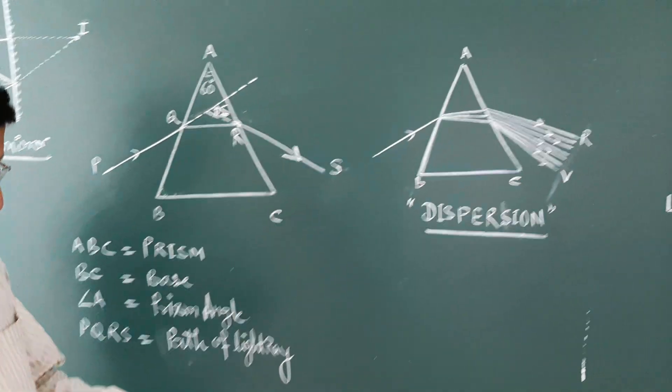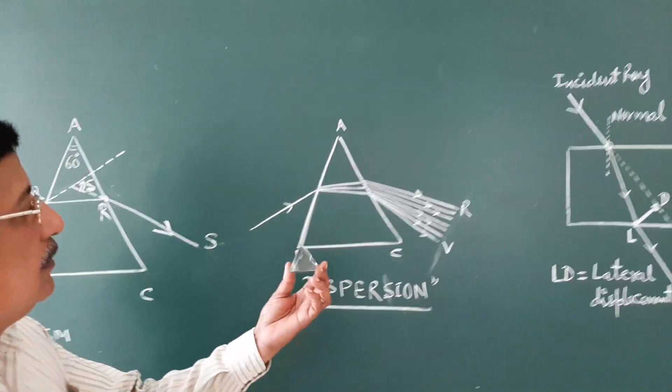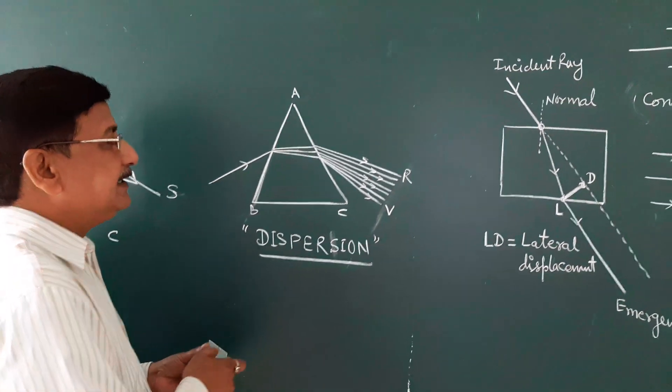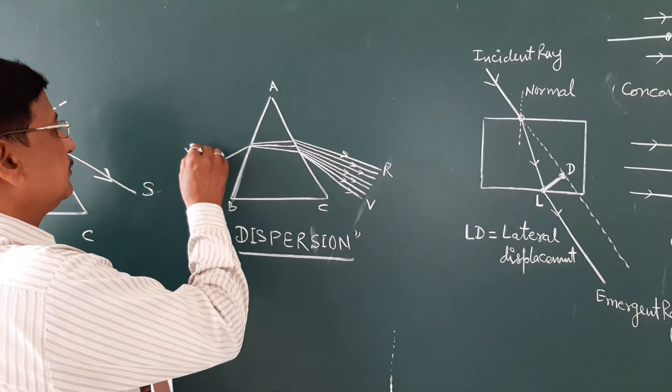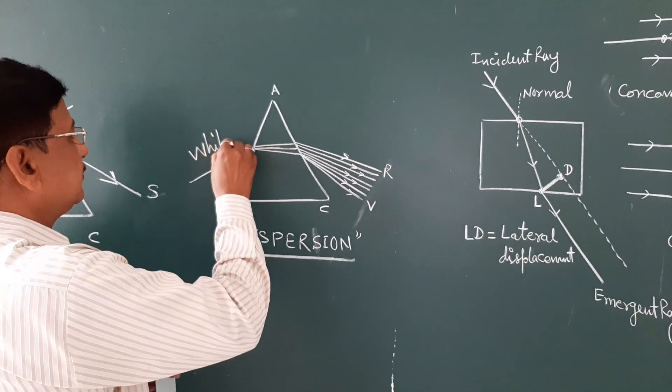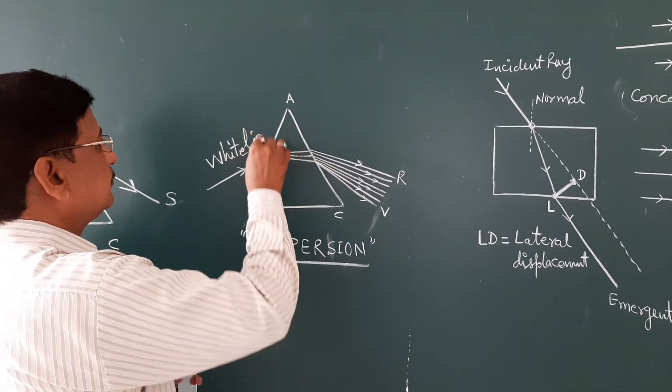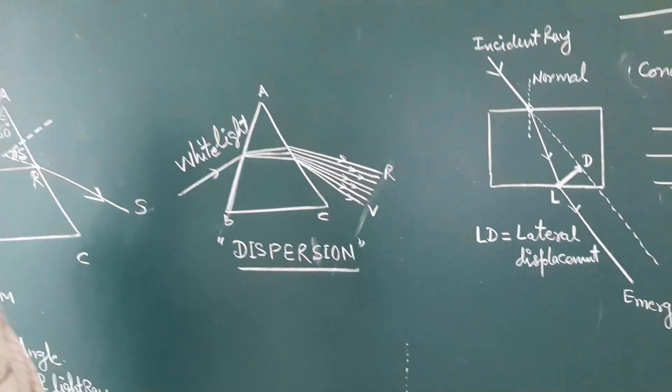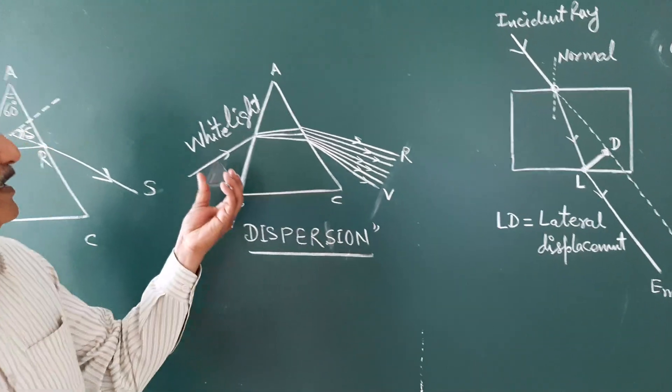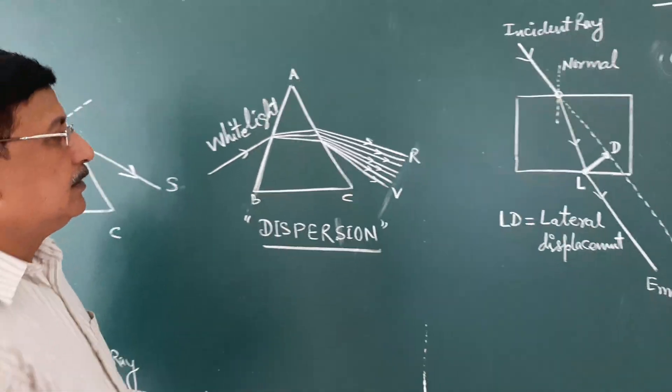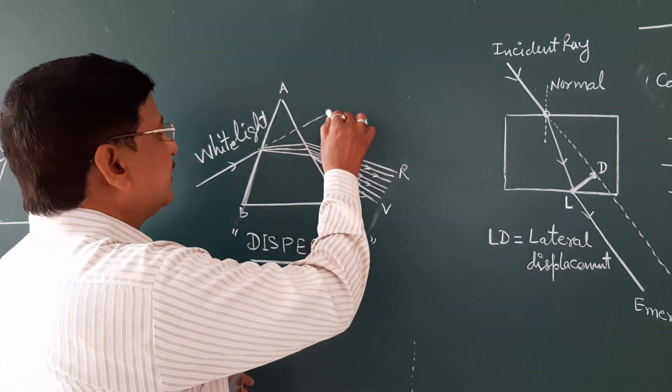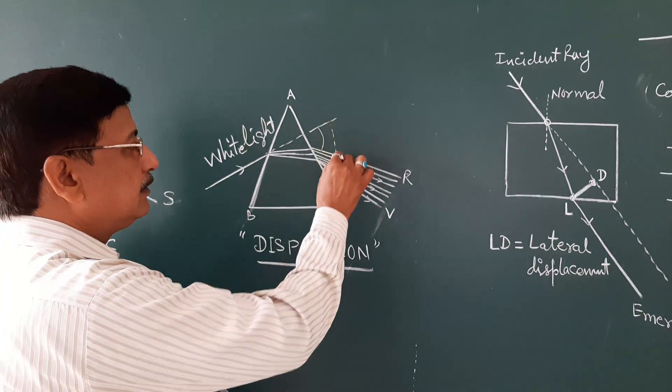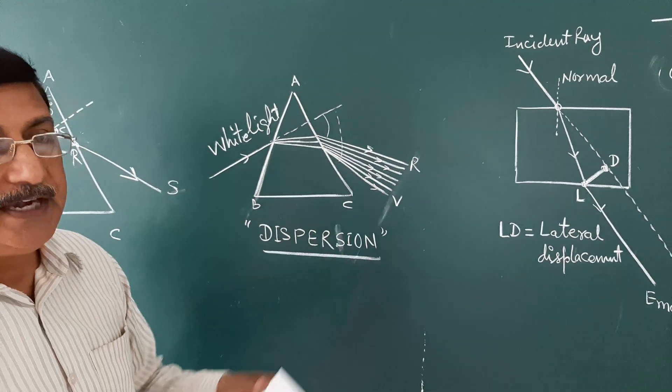Another function of the prism is to disperse or to split white light into seven colors. This is white light. This phenomena is called dispersion, meaning prism splits the white light into seven colors. The red color deviates least, while violet color deviates most.